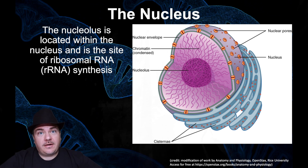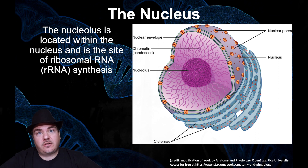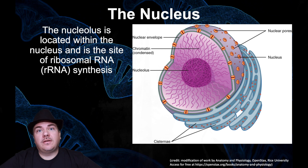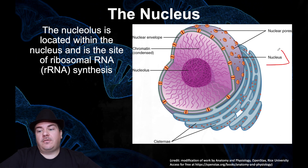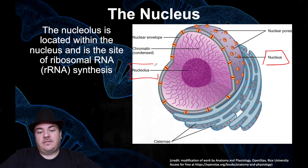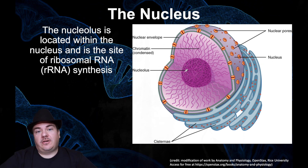A word of warning: be careful because there are three terms that sound very similar to each other and are related, but not the exact same thing — nucleoid, nucleus, and nucleolus. Nucleoid is the region inside a prokaryotic cell where you find the chromosome; it is not an organelle because it doesn't have a membrane around it. Nucleus is the membrane-bound organelle inside eukaryotic cells where you store your chromosomes. Nucleolus is inside the nucleus. Be careful not to mix them up.